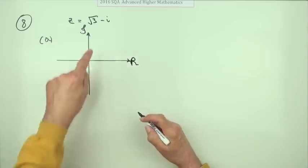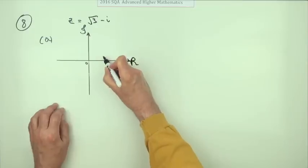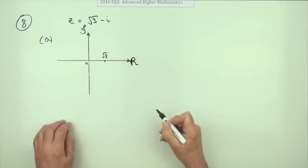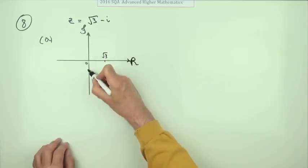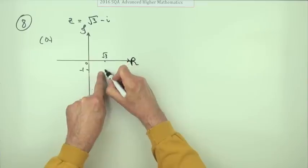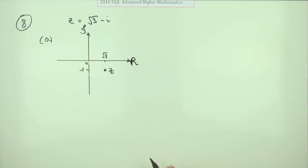On the Argand diagram, that's the real part. You go along root three. So that's the scale point root three and you go down one. That's the scale point negative one and z would be located there.